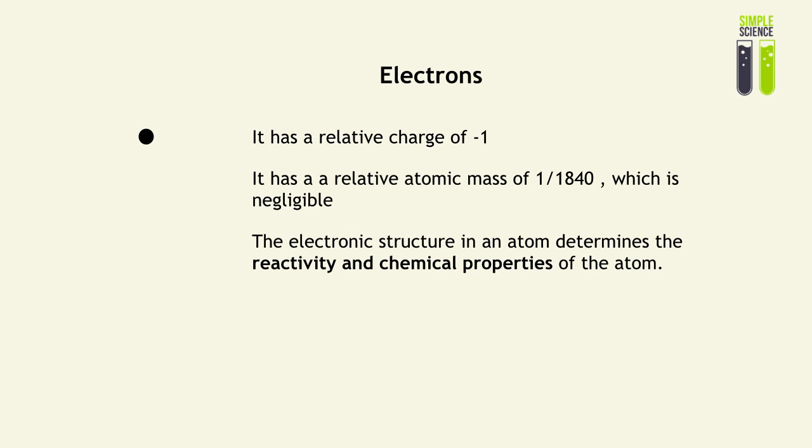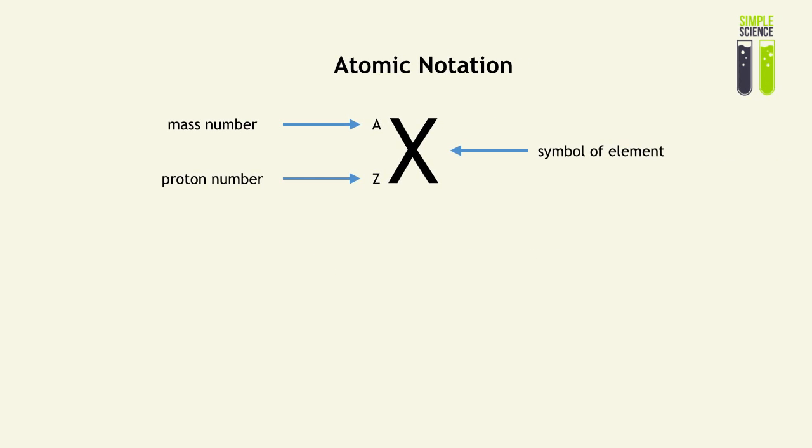Now, I've just introduced to you the three main fundamental particles in an atom. Now, we must understand how to present the atom in a certain notation. And as you see, the large letter represents the symbol of the element. For example, iron would be Fe. And the mass number, which is basically the relative atomic mass, the total number of protons and neutrons inside an atom, is represented by the notation A, which is on the top left of this notation. And the bottom left is the proton number. That's basically how many protons there are inside an atom.